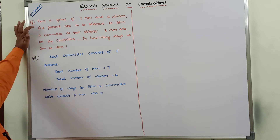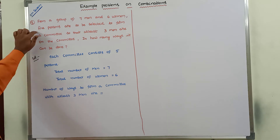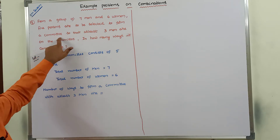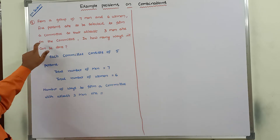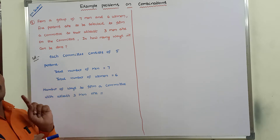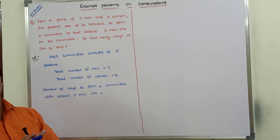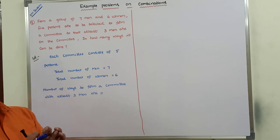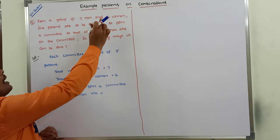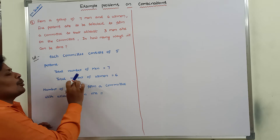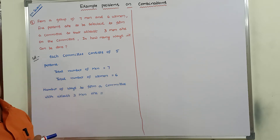From a group of seven men and six women, five persons are to be selected to form a committee so that at least three men are on the committee. In how many ways can it be done? Each committee consists of five members, selected from seven men and six women. So total number of men is equal to seven and total number of women is equal to six.